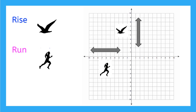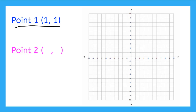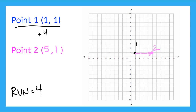Let's use these terms in practice. I have point 1 at (1, 1), and I'm going to plot it — 1 on my x, 1 on my y. Now I have a run equal to 4. Remember, run is a change in the x-coordinate, so I'm going to add 4, making point 2 at (5, 1). I can find that at 5 on the x-axis and 1 on the y-axis. I can see that the run, or distance between my two x-coordinates, is 1, 2, 3, 4 — so the run equals 4.